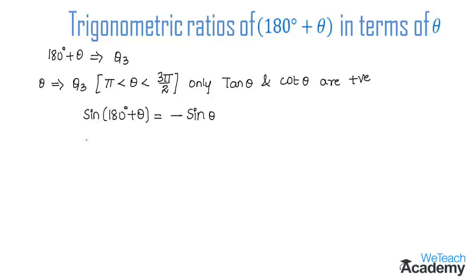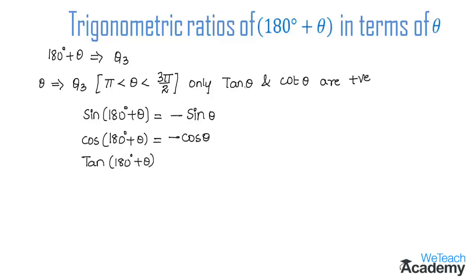Next, cos(180° + θ): the value is negative, and since 180 is even, cos remains cos. So cos(180° + θ) = −cos θ. Then, tan(180° + θ): since tan lies in the third quadrant where tan and cot are positive, the result is positive. And 180 being even means tan remains tan. So tan(180° + θ) = +tan θ.